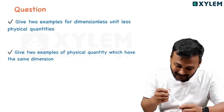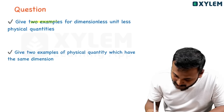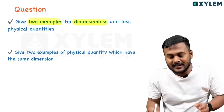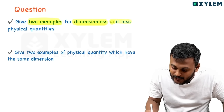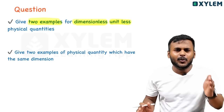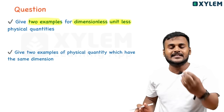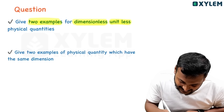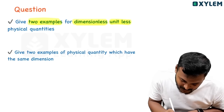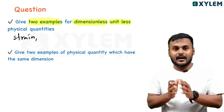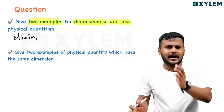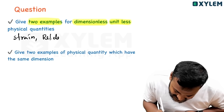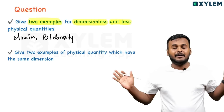Two examples for dimensionless unitless physical quantities. Unit is not dimension. The first example is strain — strain has no unit and no dimension. The second example is relative density — relative density also has no unit and no dimension. These two examples you have to take.